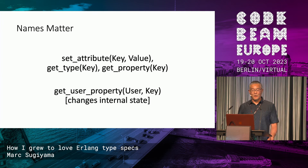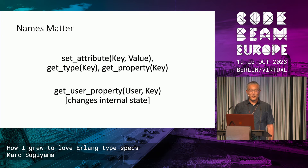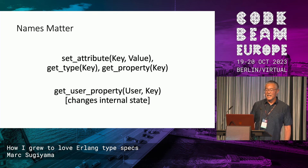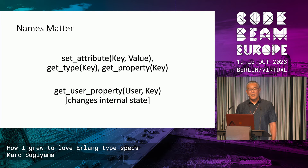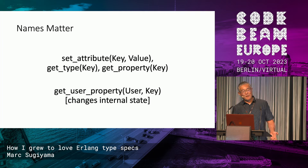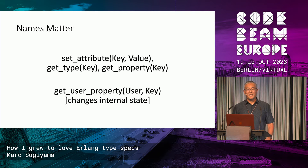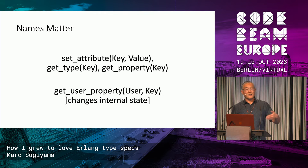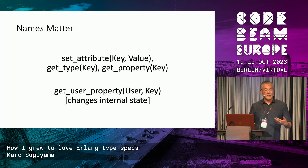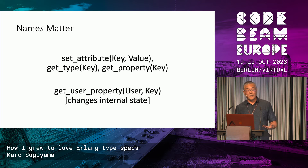Among the problems were things like this: there was a set of functions called something like set_attribute, get_type, get_property, and they were all actually operating on the same thing. Every time I was looking at the code I'd say, what's the difference between a property and an attribute? Then I'd have to go look at the implementations and realize, oh, they're the same thing. This just added to the cognitive load of trying to understand what was already very complicated and confusing code.